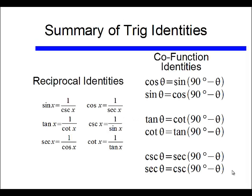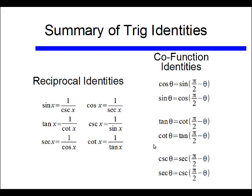In summary, here are the trig identities this video has discussed: the reciprocal identities — all six of them — and the co-function identities. Remember, I'm using 90 degrees here, but I could also use π/2. Since π/2 equals 90 degrees, if working in radians, this is how the co-function identities would be written.